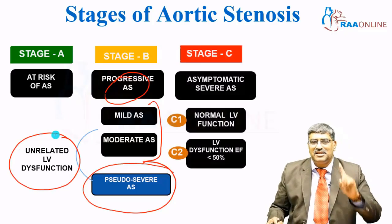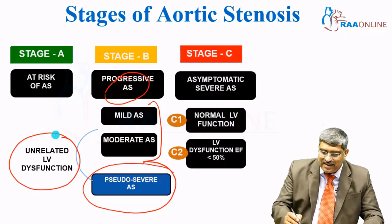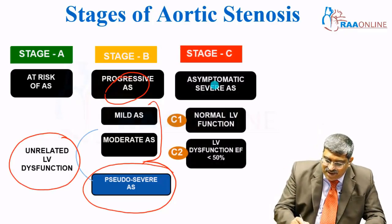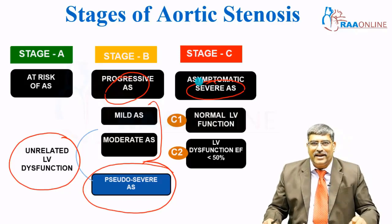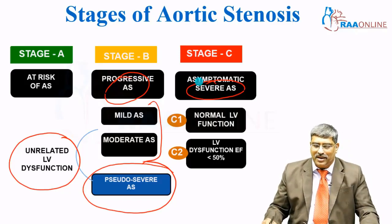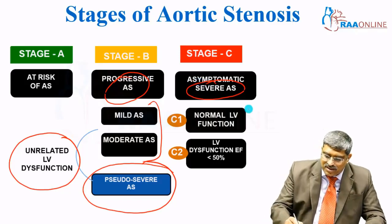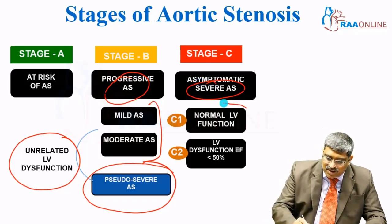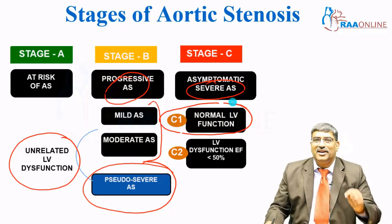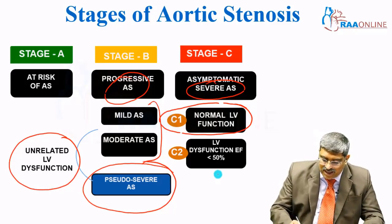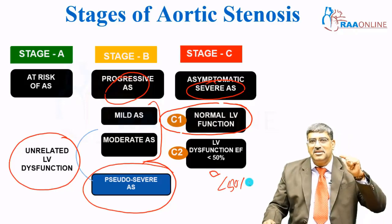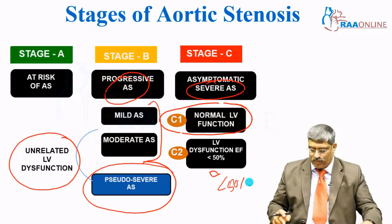Stage C is severe AS but the patient is asymptomatic. In C1, LV function is preserved, while C2 is where LV dysfunction is less than 50% ejection fraction.